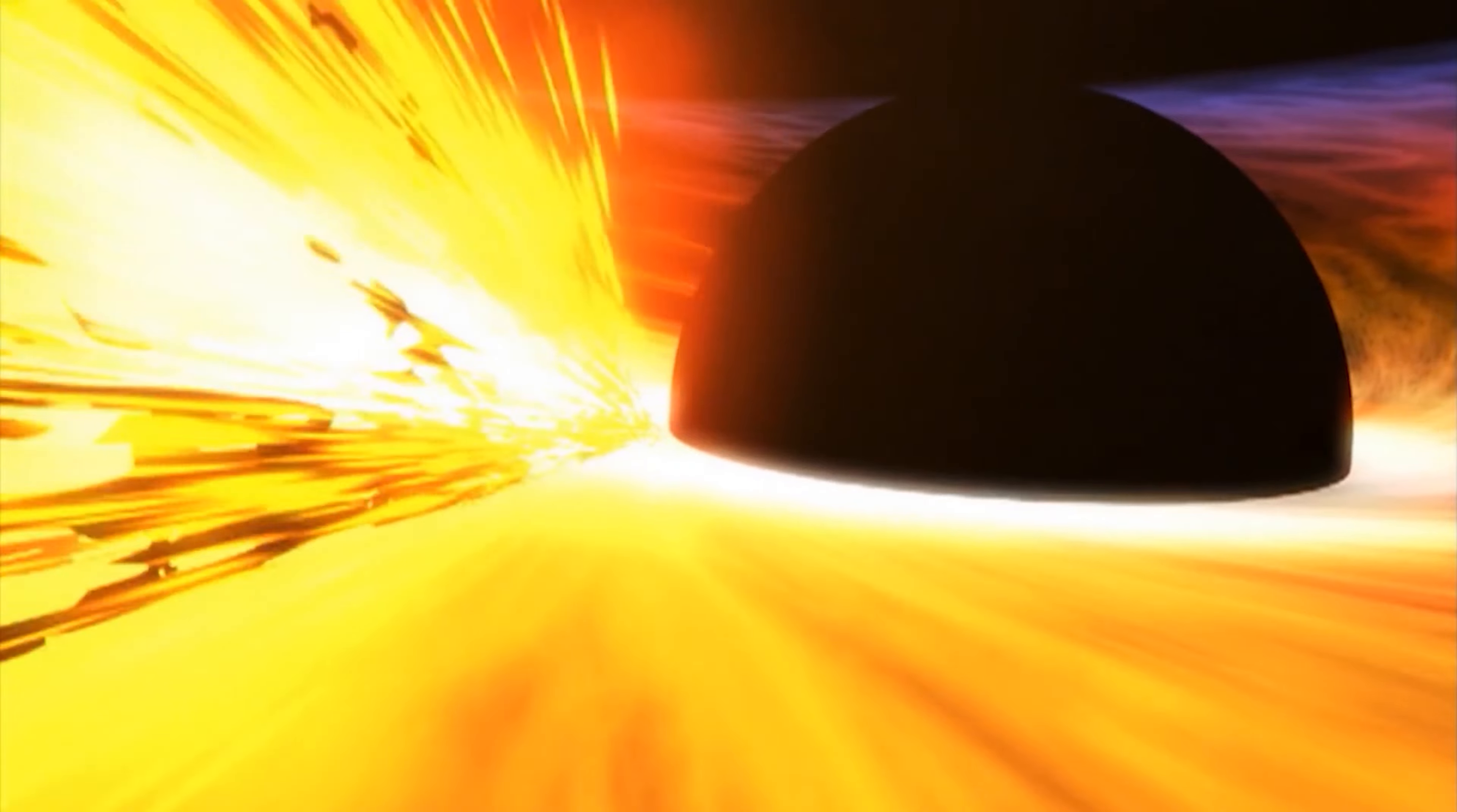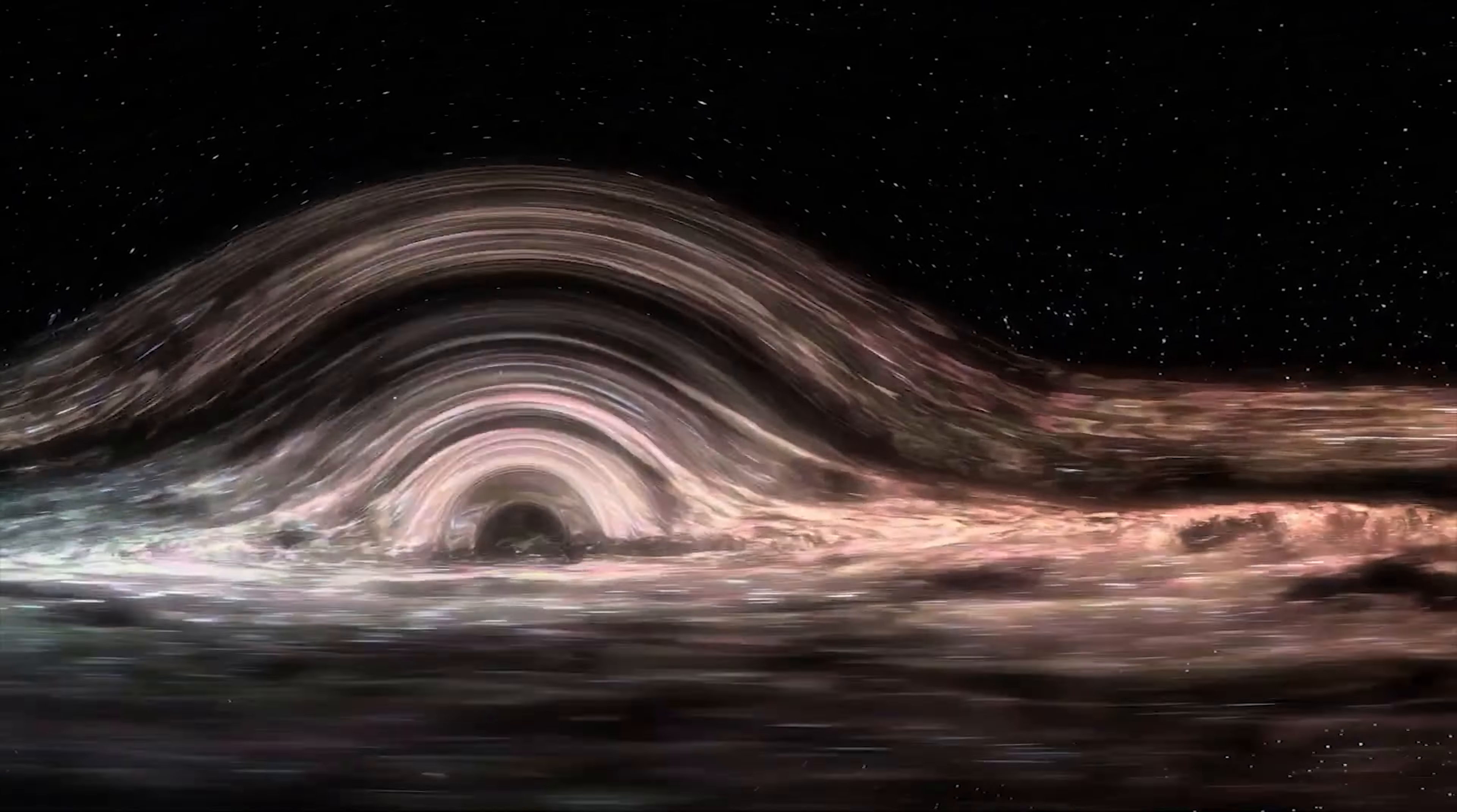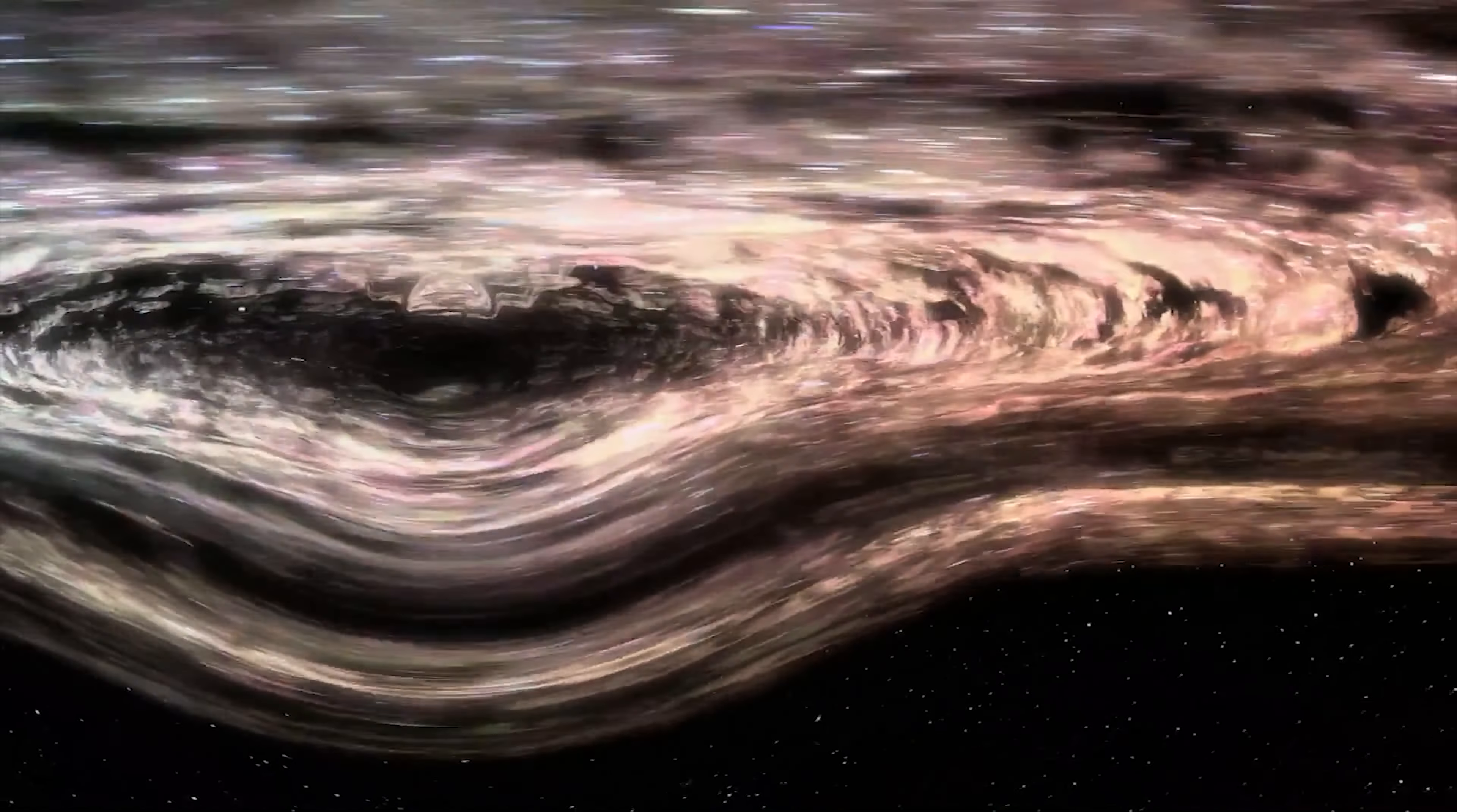The mass of the black hole would increase significantly. The Earth that was once our home would become a cloud of dust and begin to orbit around the black hole, gradually forming a bright, hot accretion disk.